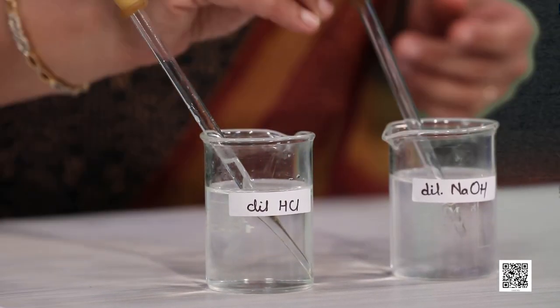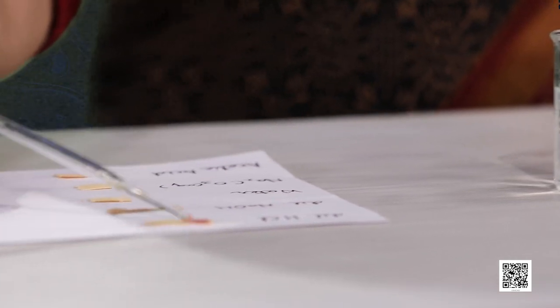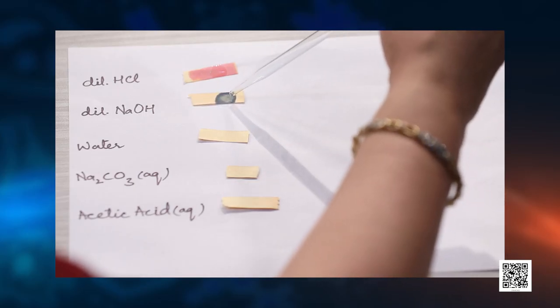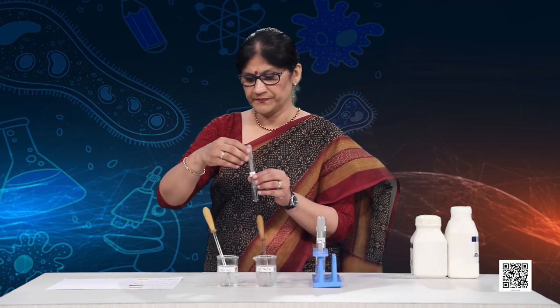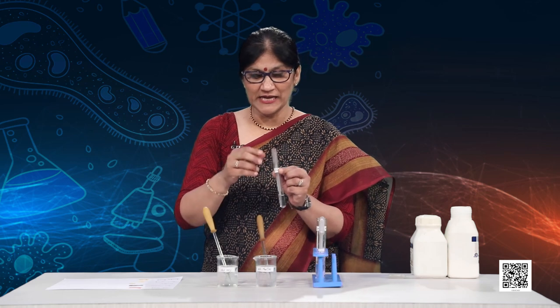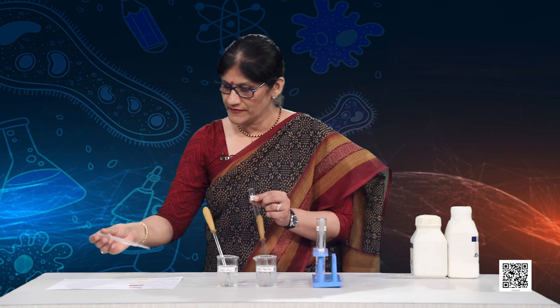Let us check the color change of this universal indicator with some substances I have on the table — the rest is up to you; you can check in your kitchen or lab. Let us start our activity and record our observations. I have my solutions — a dropper for HCl and NaOH — and my indicators on this paper. With HCl, I have got a beautiful reddish-pink, orangish-pink color. With NaOH, it is a dark greenish-blue coloration. With water, there is no color change as expected, because water is neutral. With sodium carbonate, the color has changed to light green.